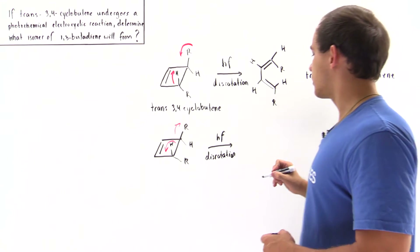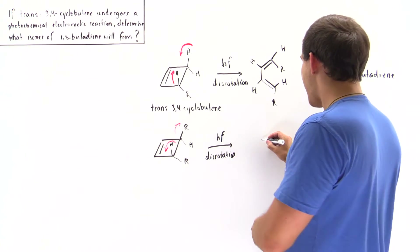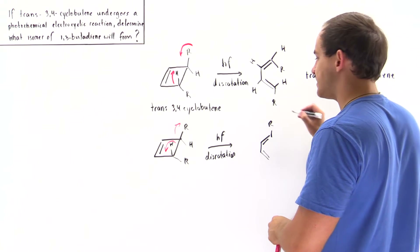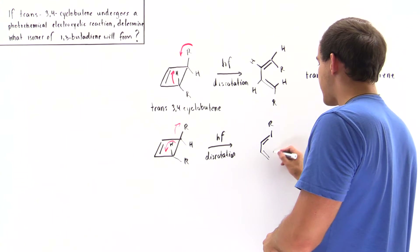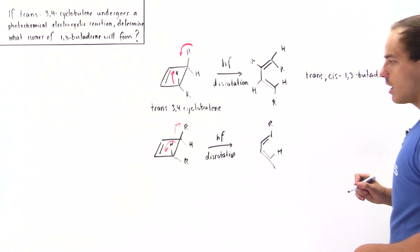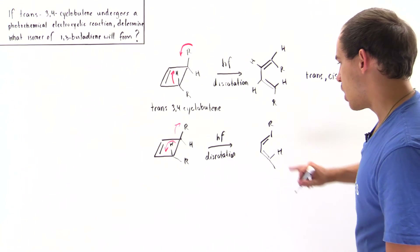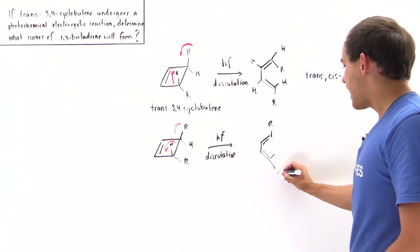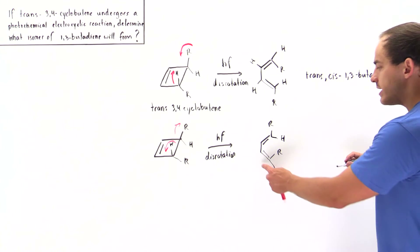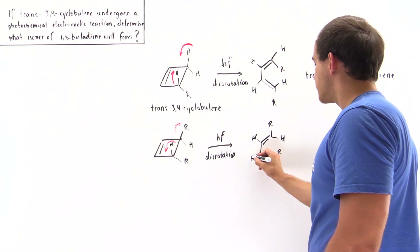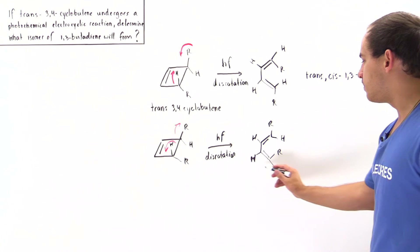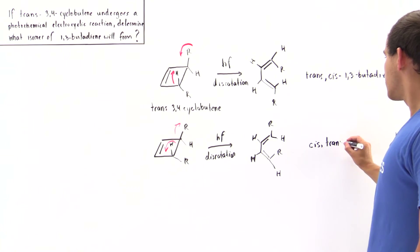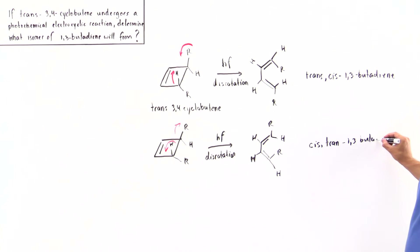Photochemical electrocyclic reactions only rotate in the disrotation fashion. In this case the R goes into the board, so the R is here, and the other R comes out of the board. The H comes out of the board on one side, so we have an H here, an R here, and an H here. Looking at the two double bonds: one is cis since the substituents point in the same direction, and the other is trans. So we form cis-trans 1,3-butadiene.